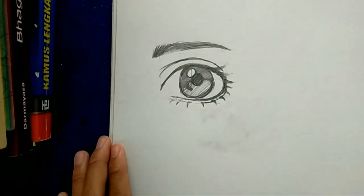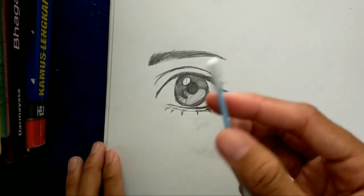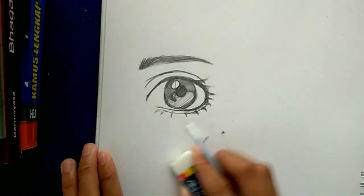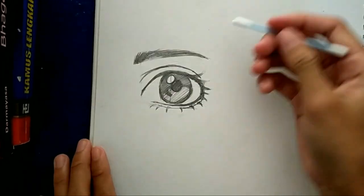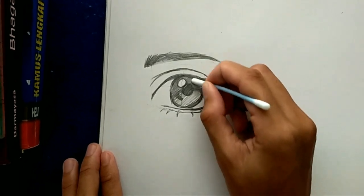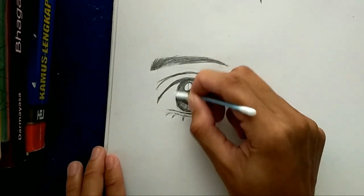To make your eyeball look more realistic, you can use a cotton bud to smooth the shade of your eyeball. You can do it like this.